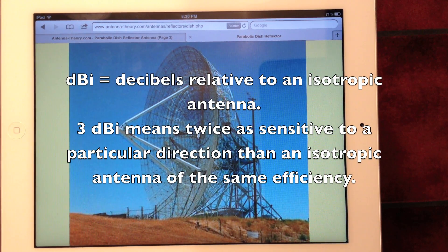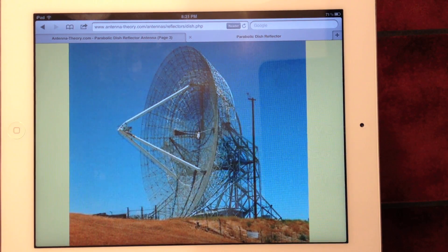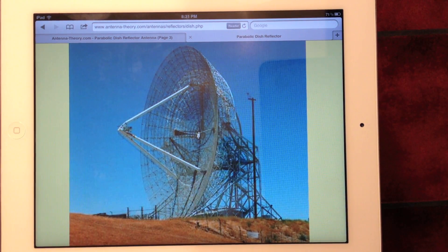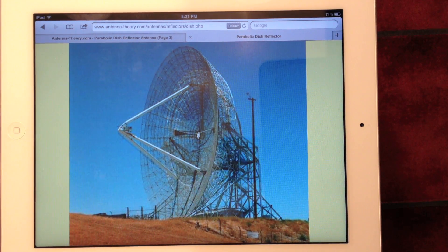So a 40 dBi antenna gain means that the antenna is 10,000 times more sensitive in the direction of peak radiation, which would be out here, than a small antenna, which would be more isotropic.